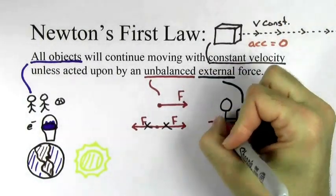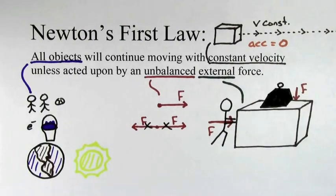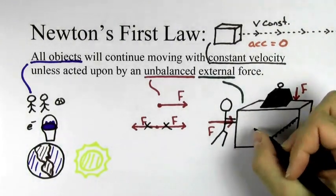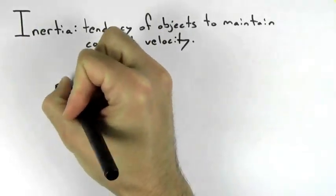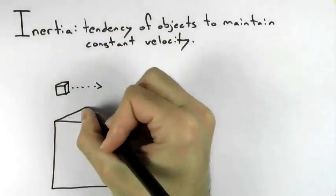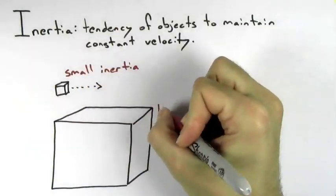And by an external force, we mean a force originating from the outside of the object. We don't really care about forces going on inside of the object. We call this tendency of objects wanting to maintain constant velocity their inertia.